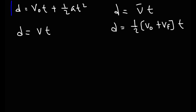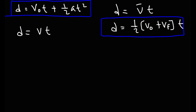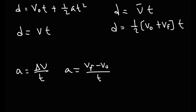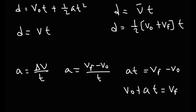Two common kinematic formulas to be familiar with. We said acceleration is the change in velocity over time, and delta v is v-final minus v-initial. Multiplying both sides by t and then adding v-initial to both sides gives: v-final equals v-initial plus a times t. That's another key kinematic formula.